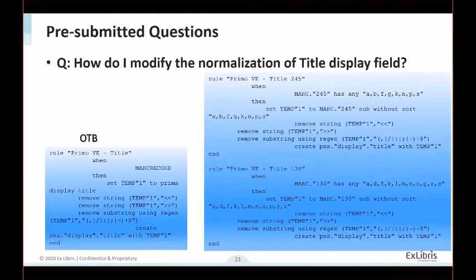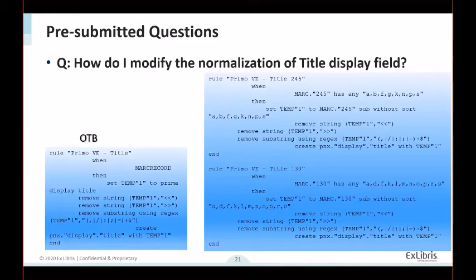Here are some questions that have been pre-submitted. How do I modify the normalization of the title display field? This question is better understood when inspecting the out-of-the-box version of the rule set. You'll see that it uses Java routines instead of the standard condition and Set action we are familiar with. So if you want to add or remove a subfield from the mapping, you can replace the out-of-the-box version with the suggested rule shown on the right and make the desired modifications.